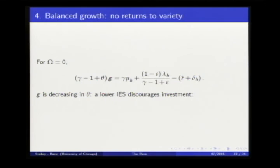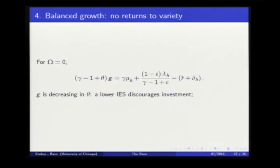For the case where omega equals zero — variety not valued — that term still drops out but now theta appears. The growth rate is decreasing in theta: a higher theta means a lower intertemporal elasticity of substitution, which discourages growth. That comparative static also moves in a sensible direction.